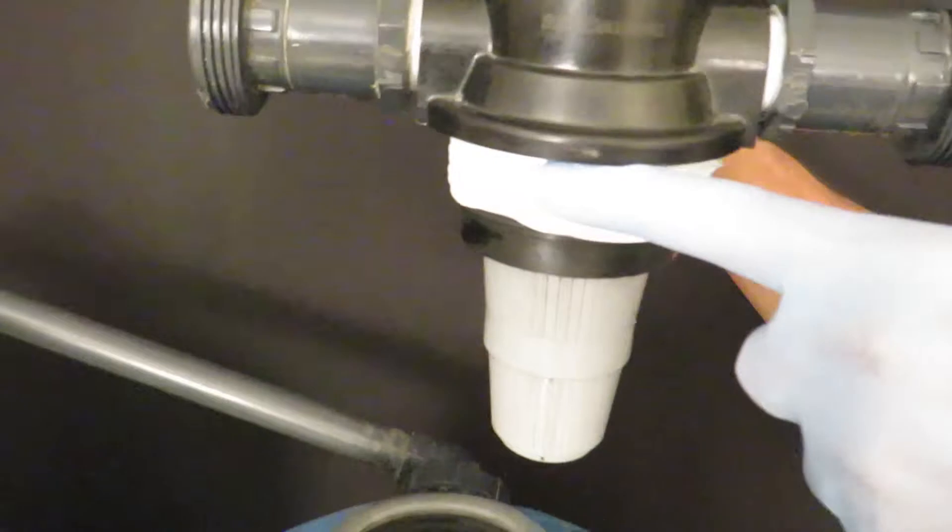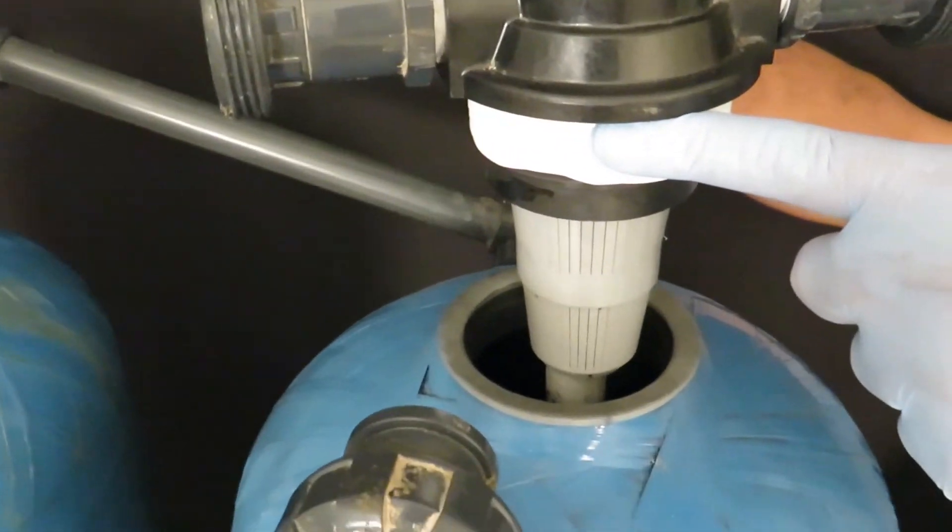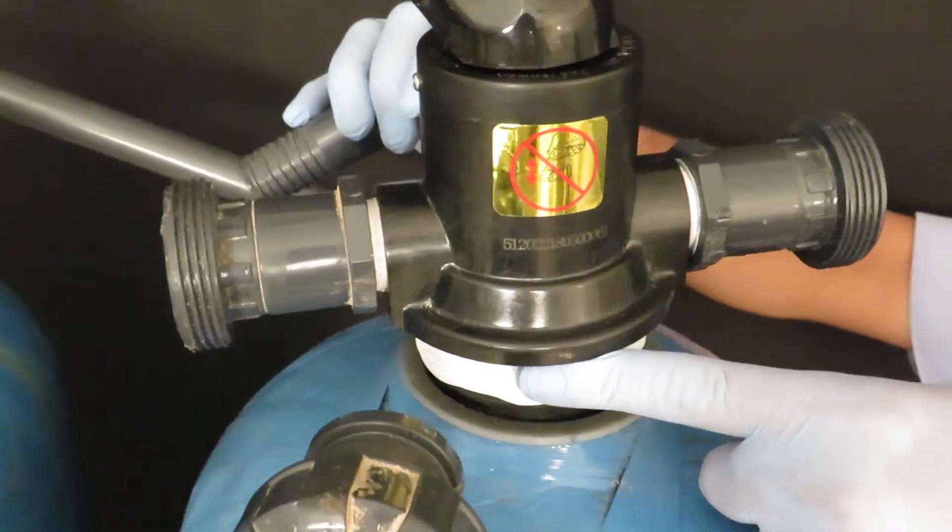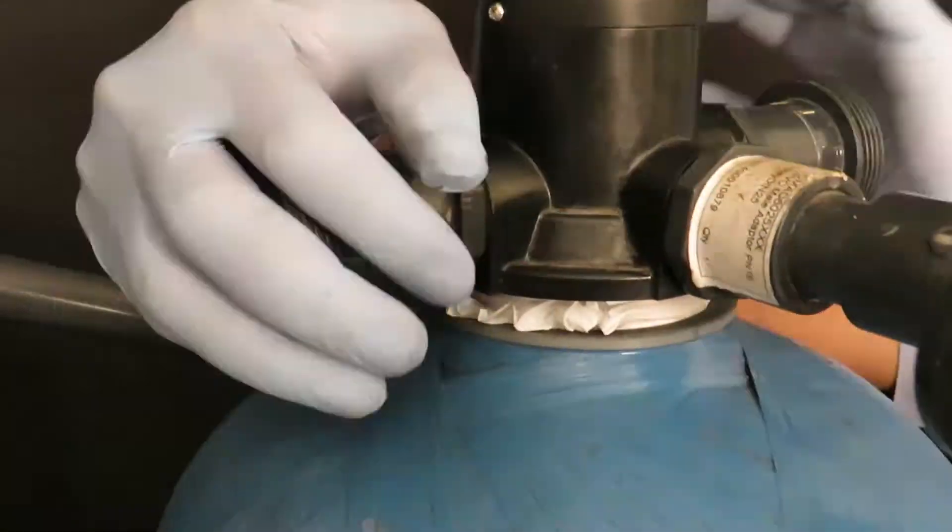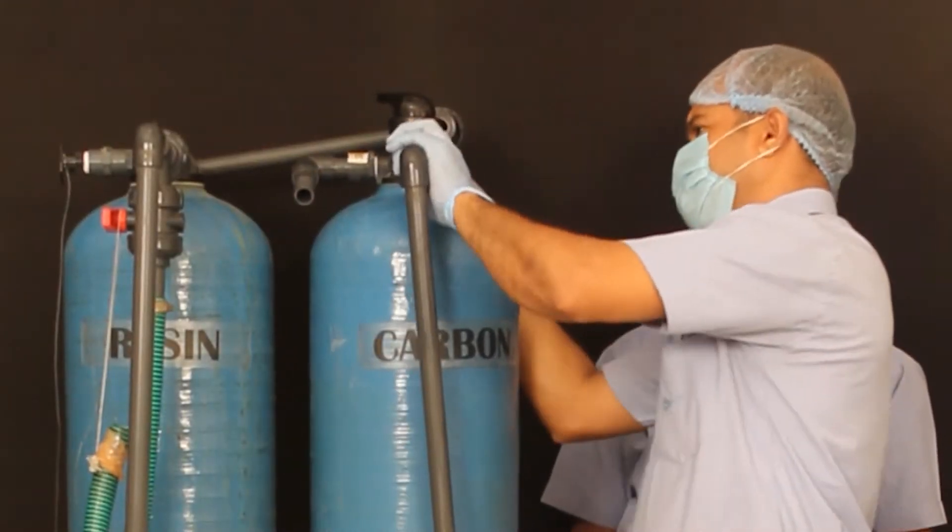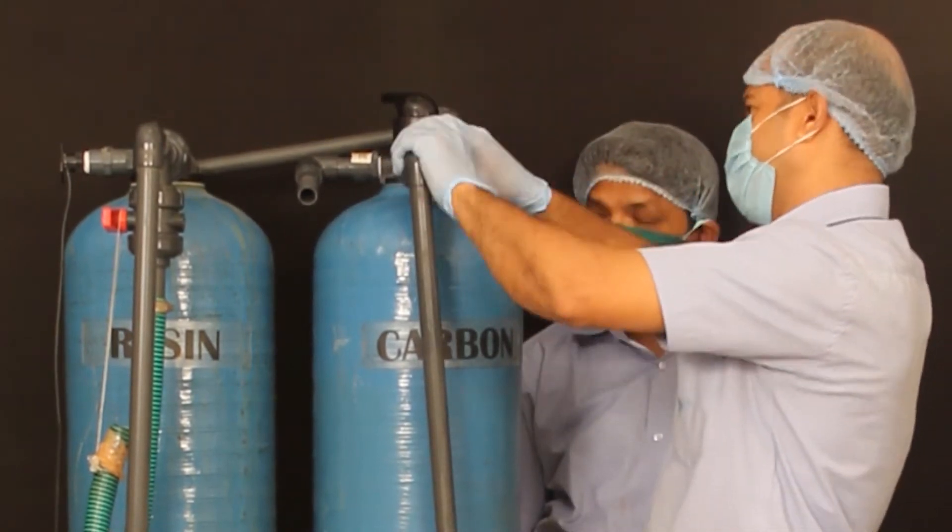Apply teflon tape properly around threads to avoid any water leakage. Fit the upper cap properly onto the pipe and tighten the cap. Now connect the cylinder back to the machine as shown in the video.